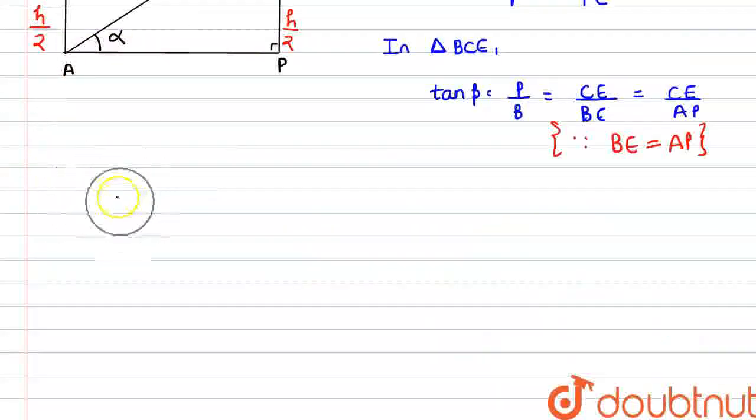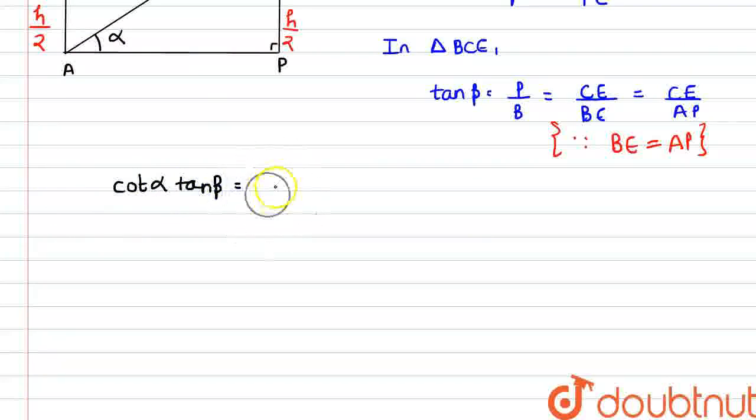Now, what is our value? Cot alpha into tan beta. We can multiply them all. So cot alpha is AP by PC multiplied by tan beta CE by AP. So AP cancels out. So we have CE divided by PC.